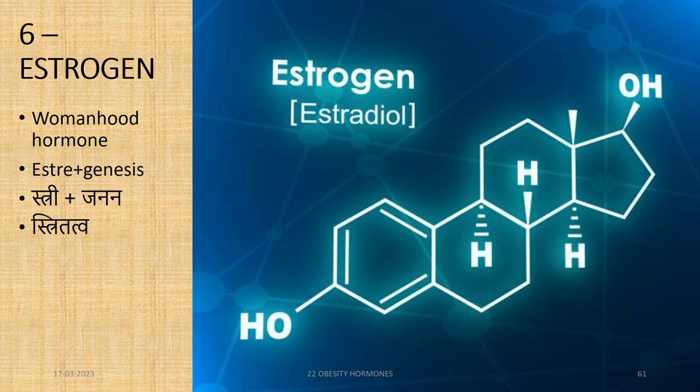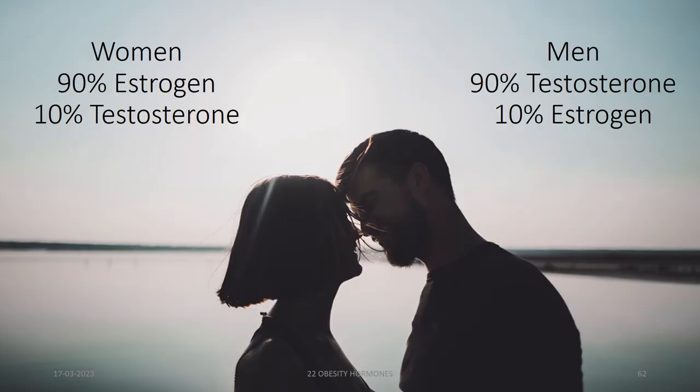The sixth hormone is estrogen, which is a womanhood hormone. The word estrogen comes from Latin estrus plus genesis — ultimately from Sanskrit su plus janan. Women have 90% estrogen and 10% testosterone in their body, and men have 90% testosterone and 10% estrogen in their body.